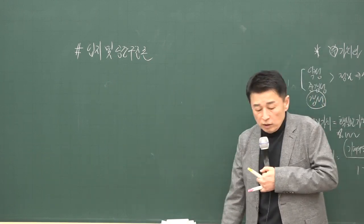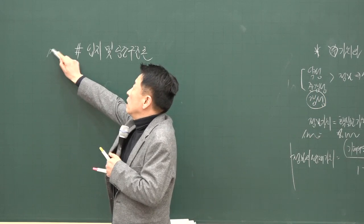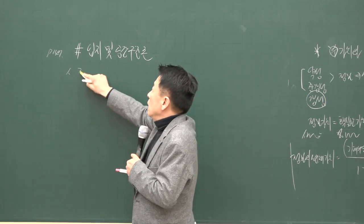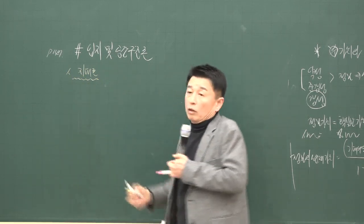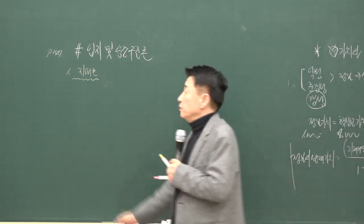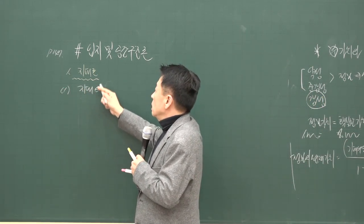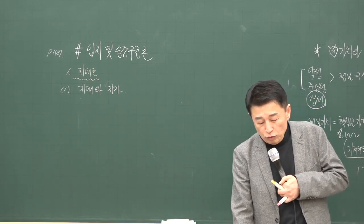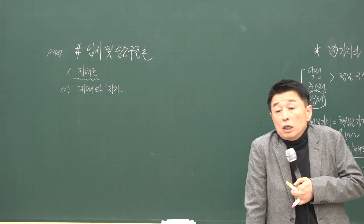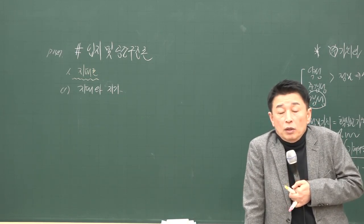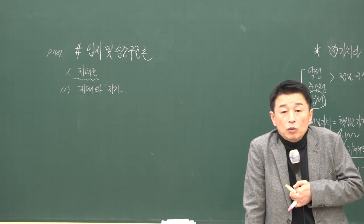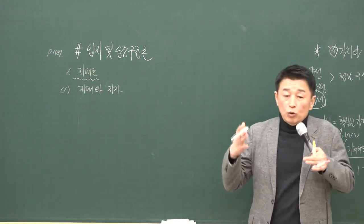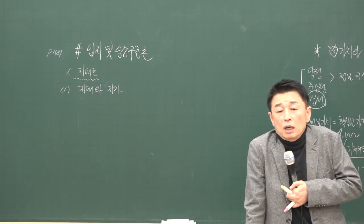다음으로 입지 및 공간 구조로 넘어가서 147페이지 지대론을 살펴봅니다. 지대론은 거의 매년 한 문제 정도 나온다고 생각하시면 돼요. 지대는 토지 이용자가 토지 소유자에게 지불하는 사용료로, 일정 기간 동안 토지 사용에 대한 대가입니다. 지가는 일정 시점에서의 토지의 가치를 말해요.